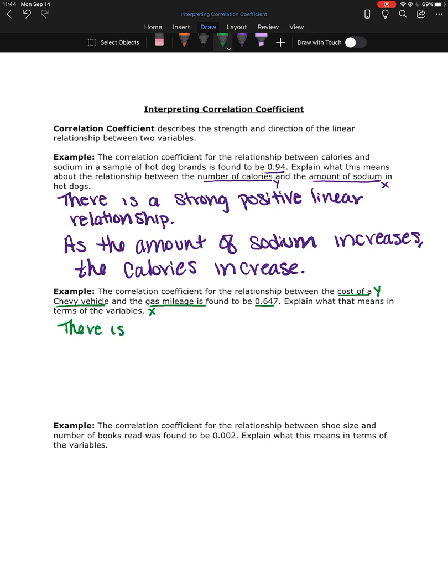So here we have 0.647, so now we have a moderate positive linear relationship.